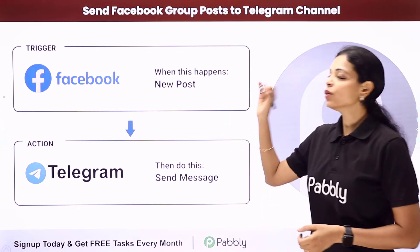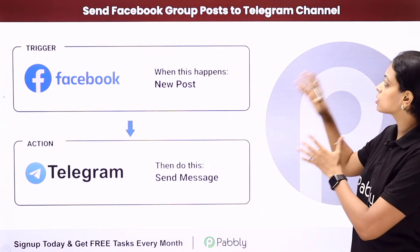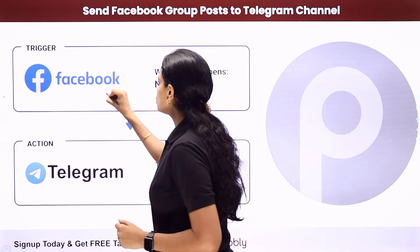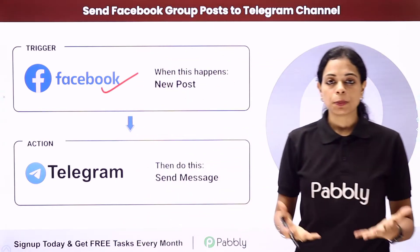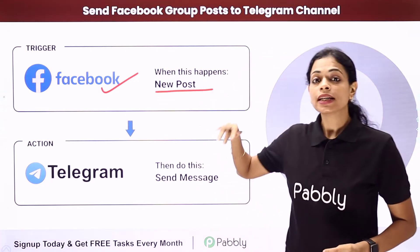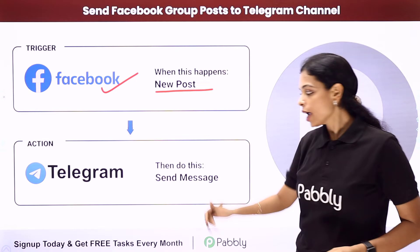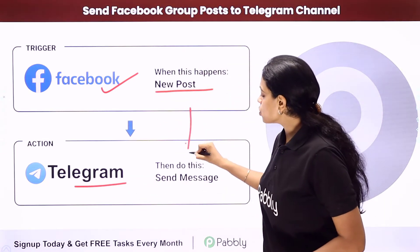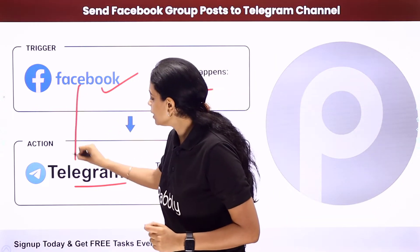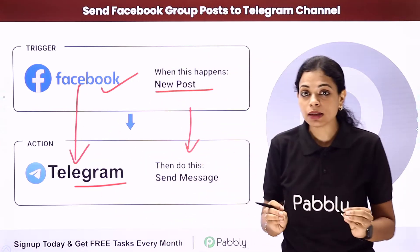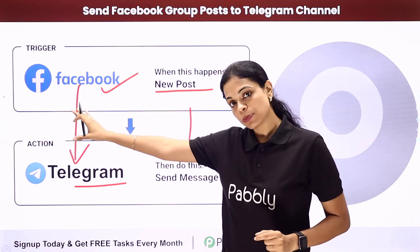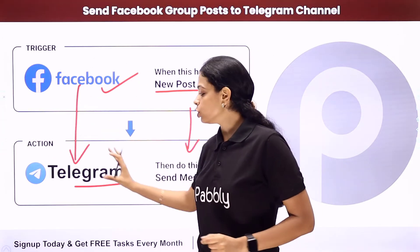In this video, we are going to see how to send Facebook group posts to a Telegram channel. Let's say you are using Facebook groups to share your posts, and every time there is a new post, you want this particular message to be shared on Telegram as a new message. You will have to integrate these two applications, and this can be done using Pabbly Connect software. Your trigger application would be Facebook and your action application would be Telegram.